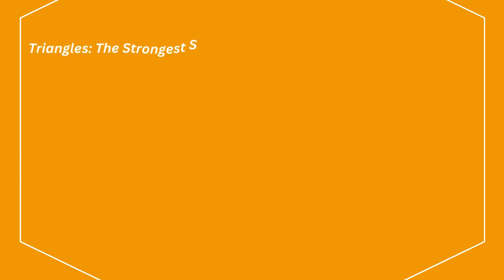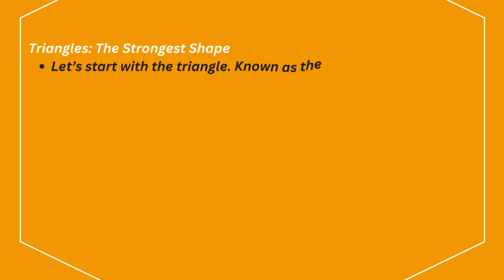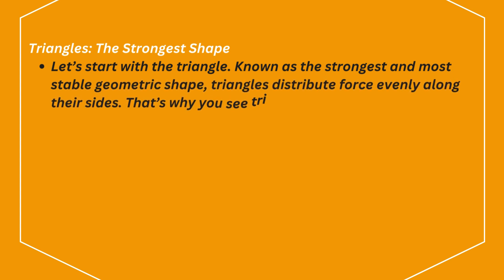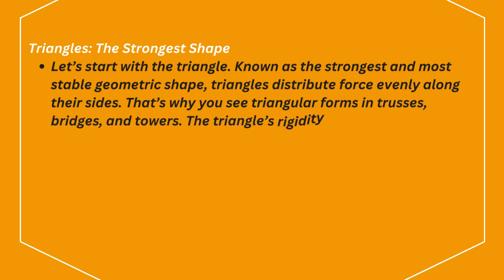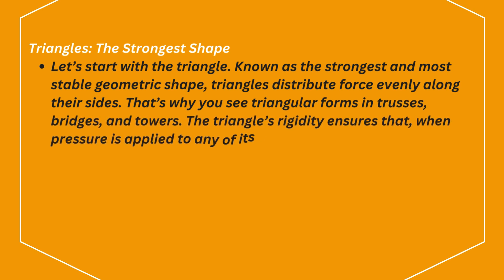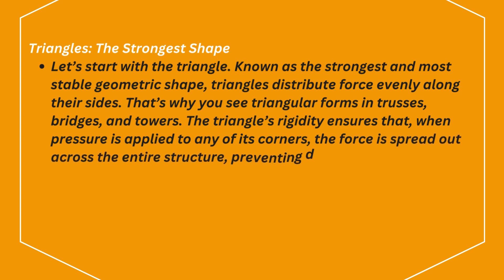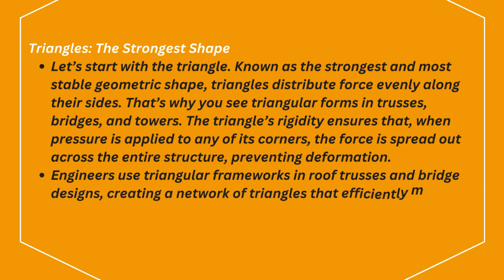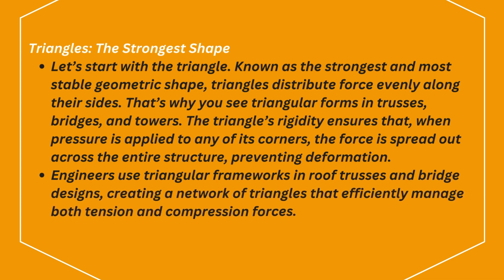Triangles: the strongest shape. Known as the strongest and most stable geometric shape, triangles distribute force evenly along their sides. That's why you see triangular forms in trusses, bridges, and towers. The triangle's rigidity ensures that when pressure is applied to any of its corners, the force is spread out across the entire structure, preventing deformation. Engineers use triangular frameworks in roof trusses and bridge designs, creating a network of triangles that efficiently manage both tension and compression forces.